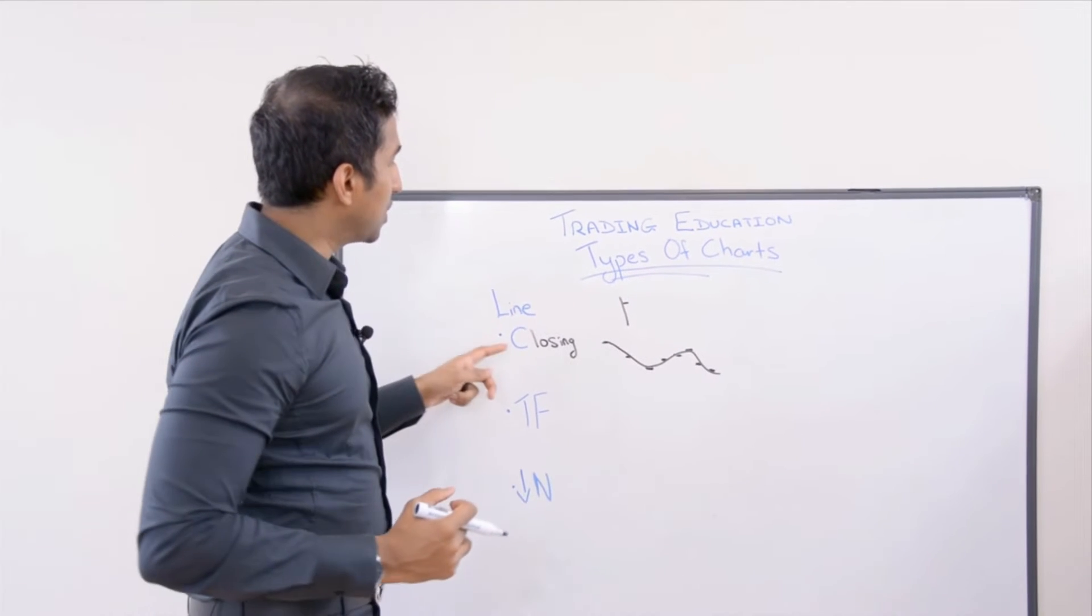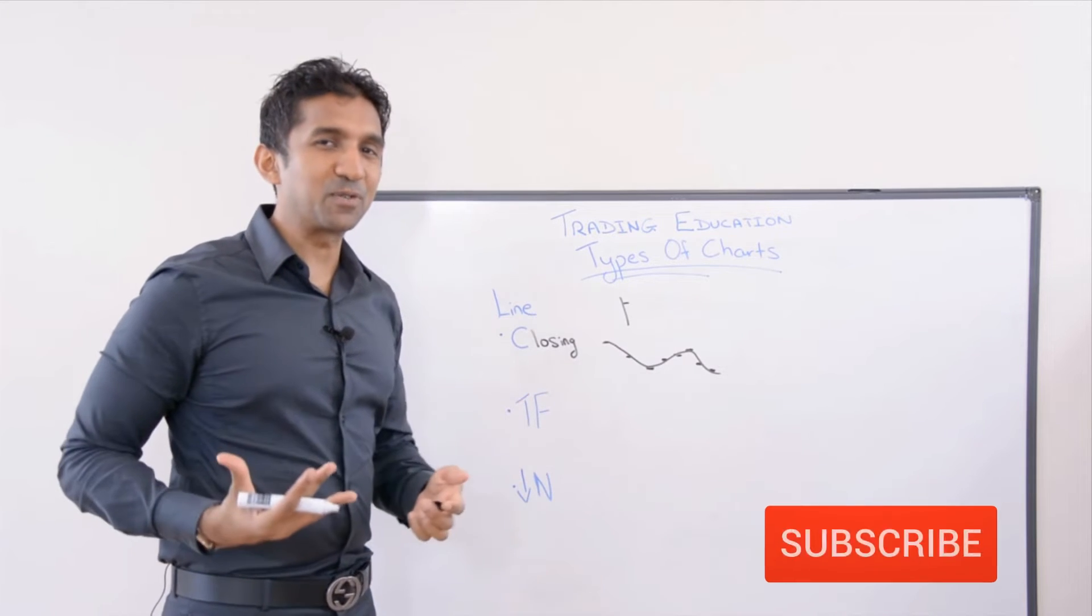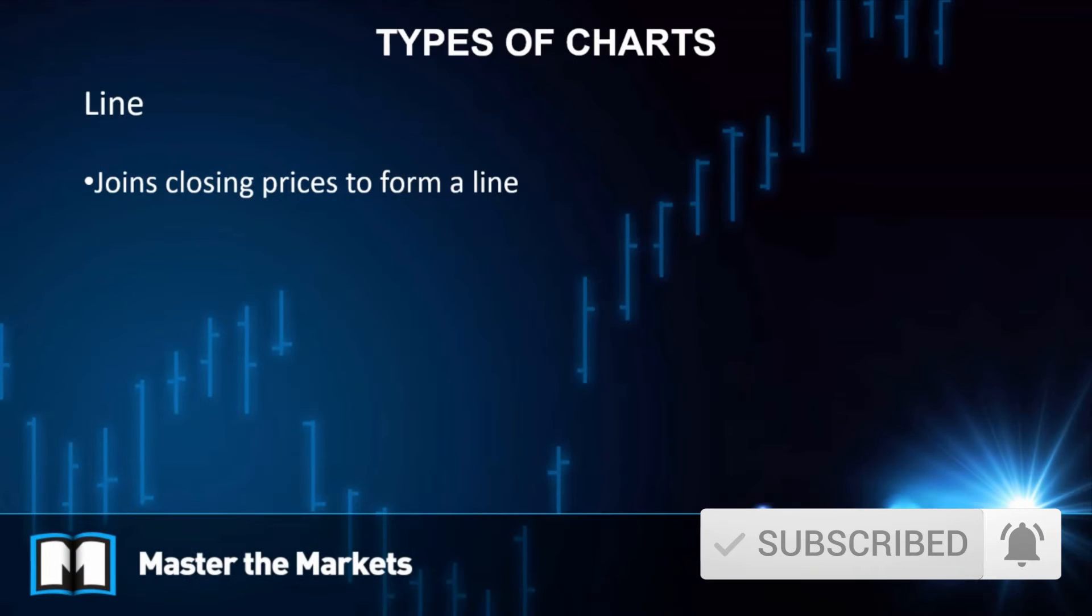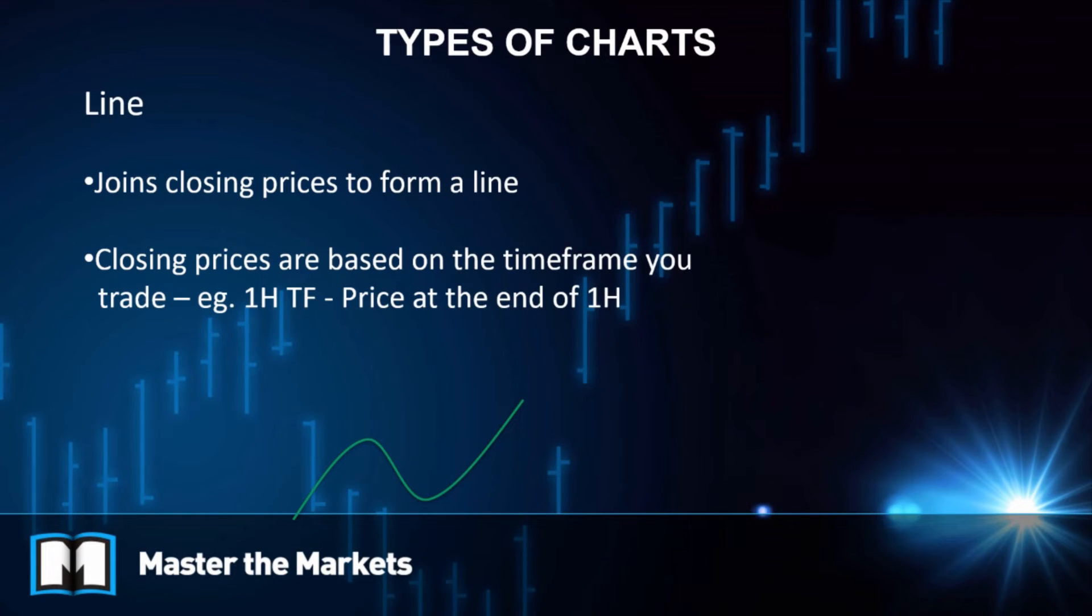Now, you may ask yourself, okay, then where did we get these closing prices from? According to what dependency? And that is why closing prices are usually based on the time frame that you are trading on, that you choose yourself according to your personality of your trading. So this time frame can be one hour or four hour or daily, whichever time frame that you choose.